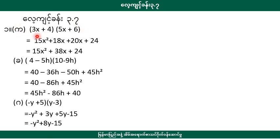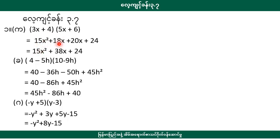Then we will take the 3.8 to 5.8 to 50.8 squared, 3.8 to 6.8 to 88, 4.5.8 to 28, 4.4.24. Then we will take the 3.8 squared, the 4.8 squared, the 5.8 squared, the 4.8 squared and 1.5 squared.